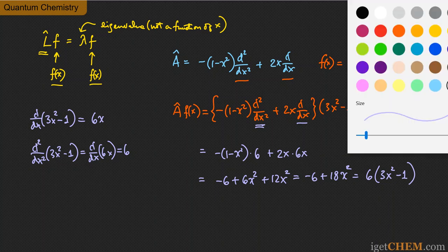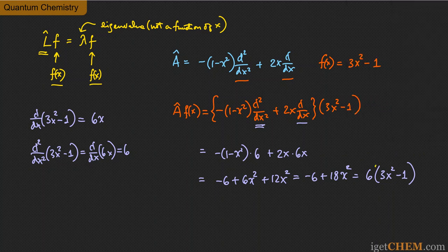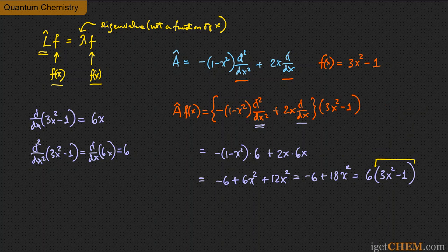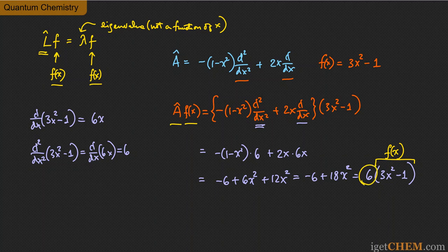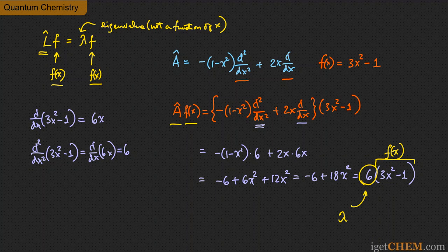Clearly, this function right here, whatever is in the parentheses, is just f(x). So you see that A operated on f(x) gives you back f(x), but multiplied by this constant 6. So the eigenvalue for this particular eigenfunction, lambda, is equal to 6. That's just another simple illustration of what an eigenequation and the eigenfunction and the eigenvalues are.